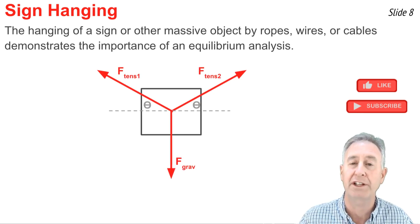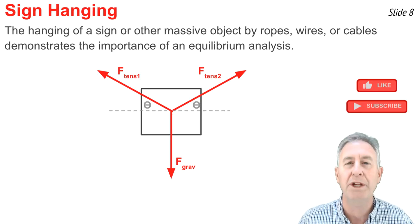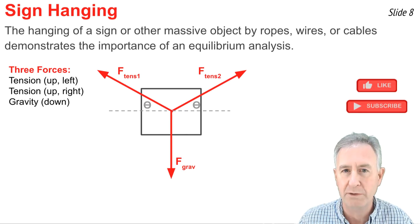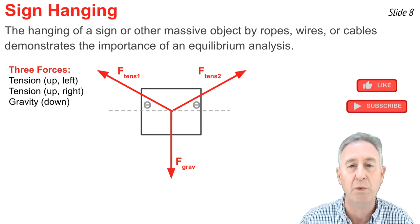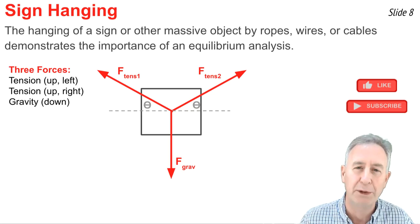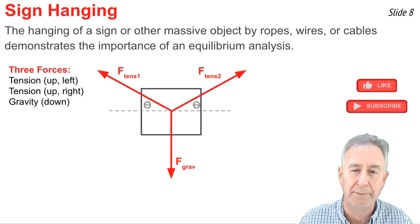what we know is that there'd be three forces acting upon the object, two tension forces up and horizontally, and one force of gravity, the force of gravity being the mass of this object multiplied by 9.8 newtons per kilogram.